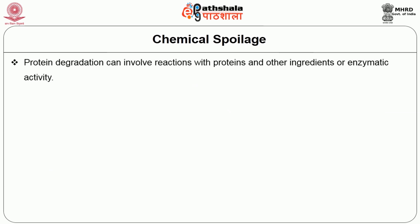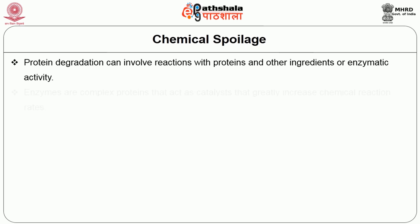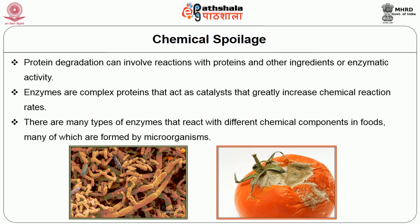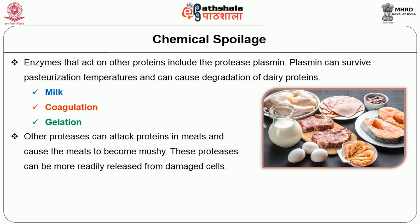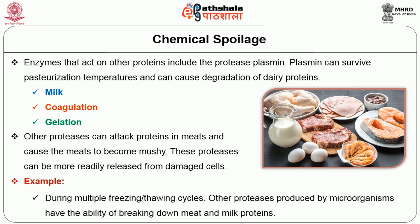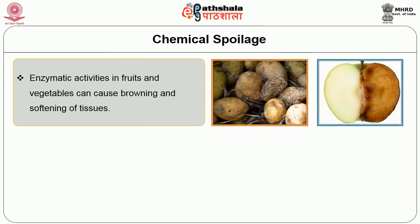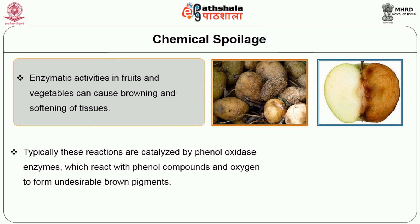Protein degradation can involve reactions with proteins and other ingredients or enzymatic activity. Enzymes are complex proteins that act as catalysts that greatly increase chemical reaction rates. There are many types of enzymes that react with different chemical components in foods, many of which are formed by microorganisms. Enzymes that act on other proteins include the proteases of proteins. Plasmin can survive pasteurization temperatures and can cause degradation of dairy proteins in milk and coagulation and gel formation. Other proteases can attack proteins in meats and cause the meats to become mushy. These proteases can be more readily released from damaged cells — for example during multiple freezing or thawing cycles. Other proteases produced by microorganisms have the ability to break down meat and milk proteins. Enzymes in fruits and vegetables can cause browning and softening of tissues, typically catalyzed by phenol-oxidase enzymes which react with phenol compounds and oxygen to form undesirable brown pigments. These reactions take place readily when cells are broken by bruising, cutting, or peeling.